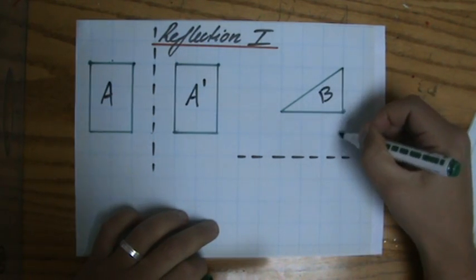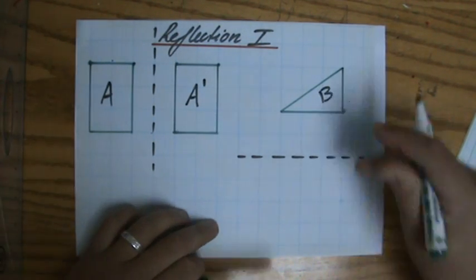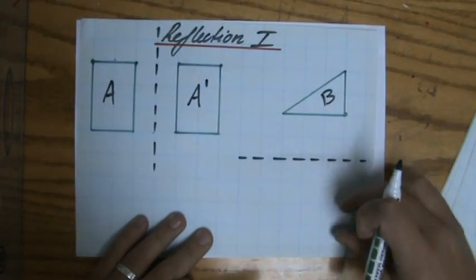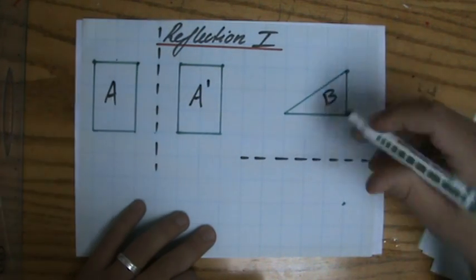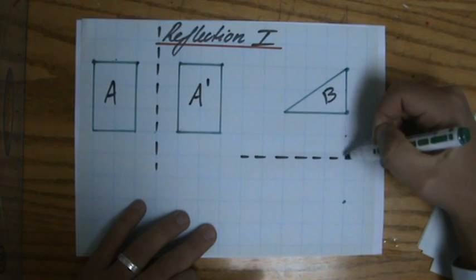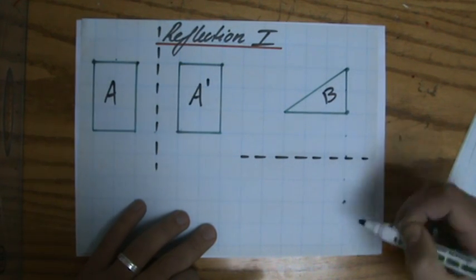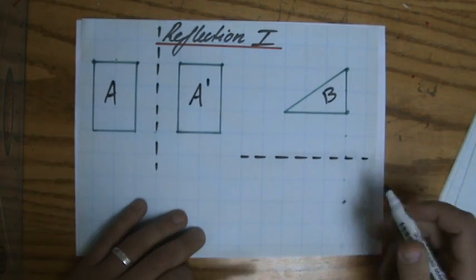So this point, one, two, so one, two, it's going to be over there. So basically I am folding it over the mirror line and I'm making a stamp of that image on the other side. Now that point, oh, it's not going to fit. Yes, it is going to fit. One, two, three, four. So one, two, three, it's going to be over here.